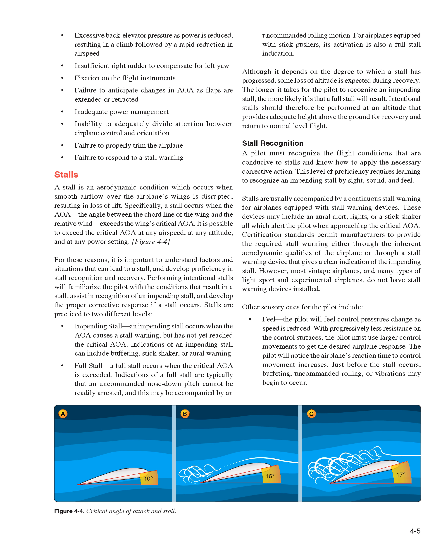Intentional stalls should be performed at an altitude that provides adequate height above the ground for recovery and return to normal level flight. A pilot must recognize the flight conditions that are conducive to stalls and know how to apply the necessary corrective action. This level of proficiency requires learning to recognize an impending stall by sight, sound, and feel. Stalls are usually accompanied by a continuous stall warning for airplanes equipped with stall warning devices, which may include an aural alert, lights, or a stick shaker — all of which alert the pilot when approaching the critical AOA.